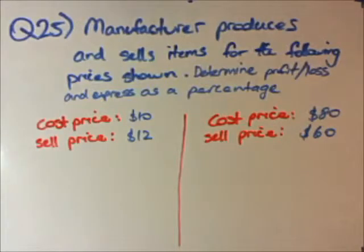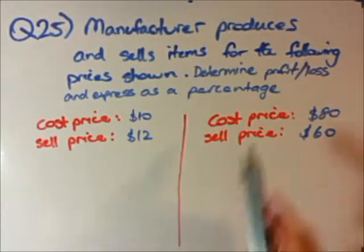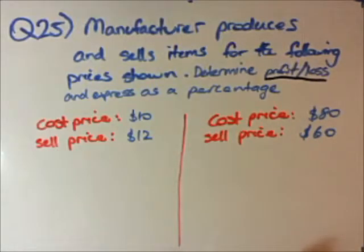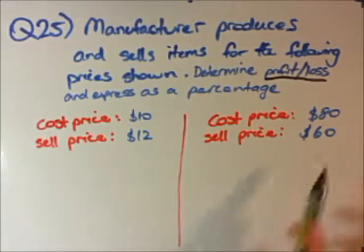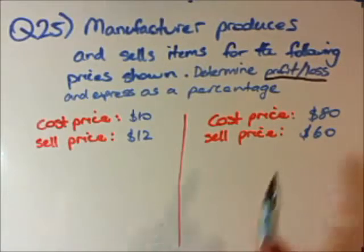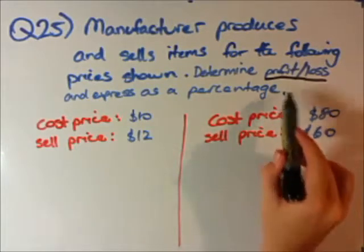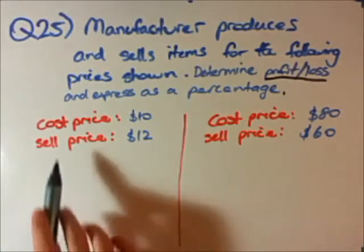Question 25 is a worded question, very similar to questions 23 and 24, but we're introducing the words profit, loss, and discount. A manufacturer produces and sells items for the prices shown. We want to determine whether the manufacturer makes a profit or a loss, and then express that profit or loss as a percentage.